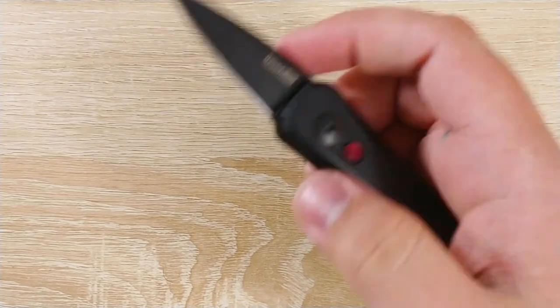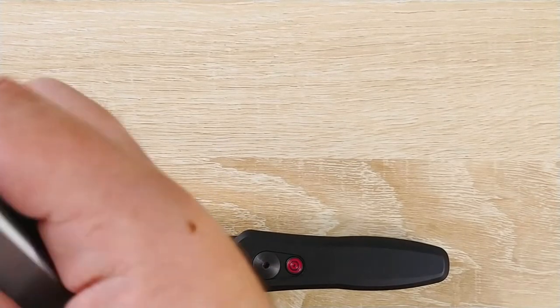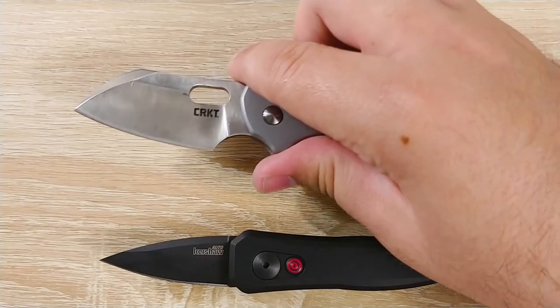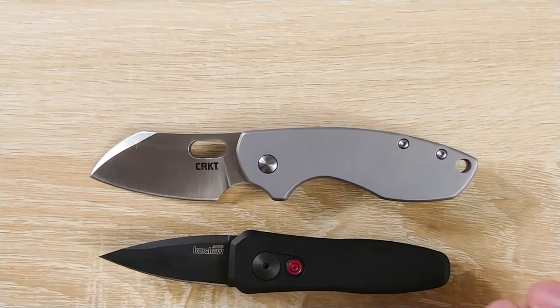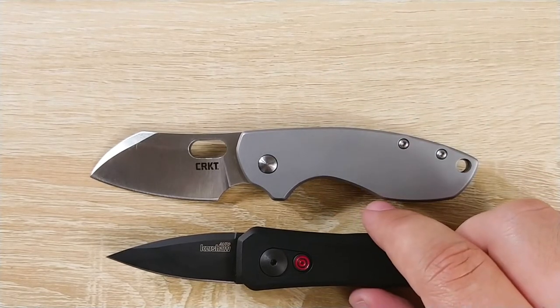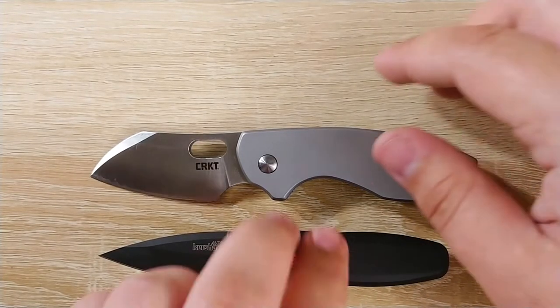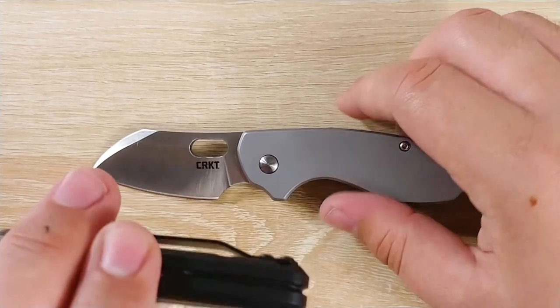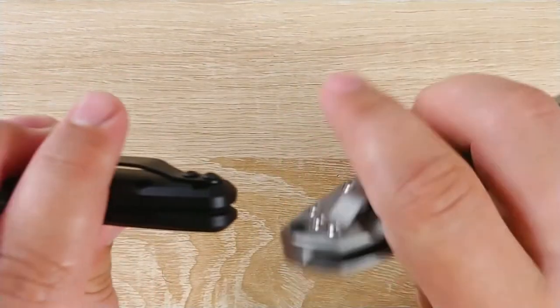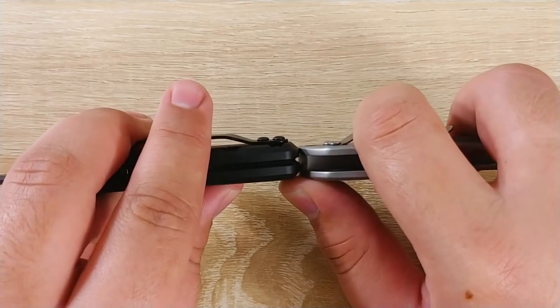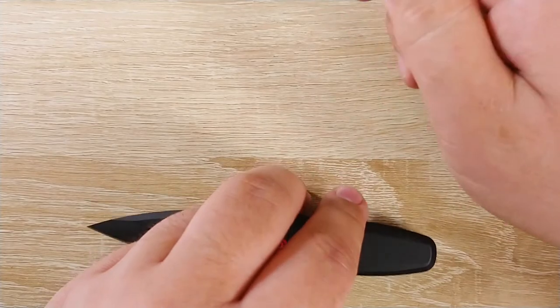Alright, first up we'll go ahead and do a size comparison. We'll get out the CRKT Pilar. So you can see the Pilar, a little bit longer blade, a little bit longer handle, a little bit wider. It is actually thinner though. And that's one of my complaints we'll get back to, but this is a fairly thick knife.